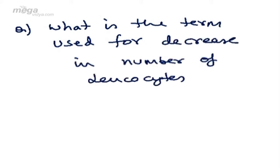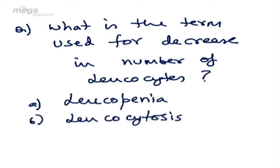You can get a question: What is the term used for decrease in number of leukocytes? Suppose I give you four options: A. Leukopenia, B. Leukocytosis, C. Leukemia, or none of the above. The answer will be A, Leukopenia.